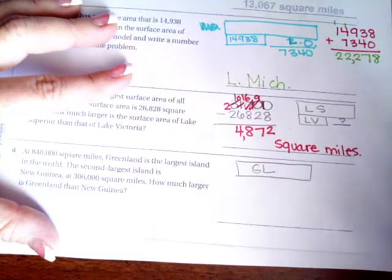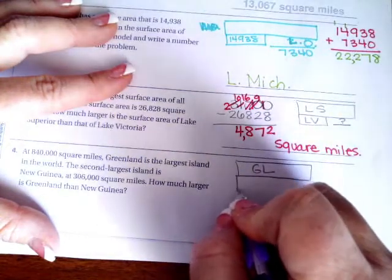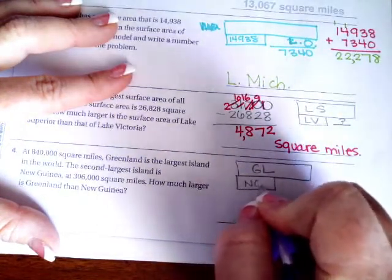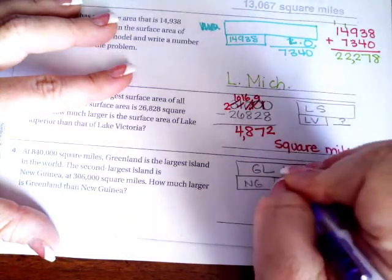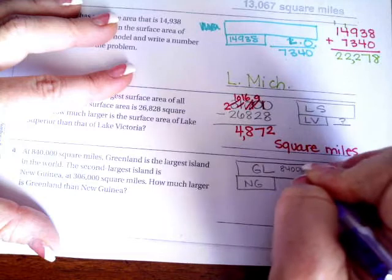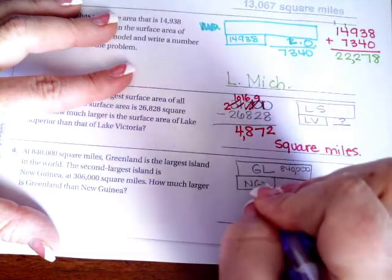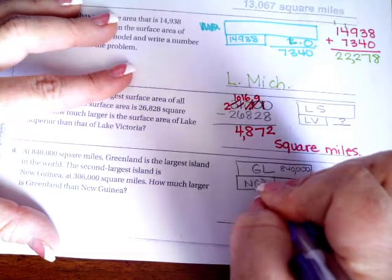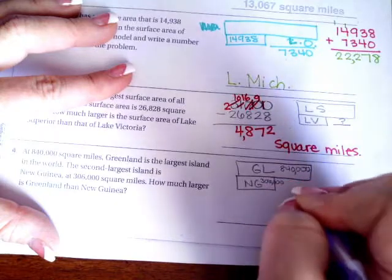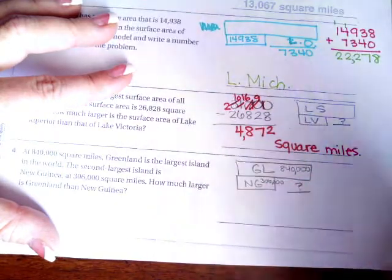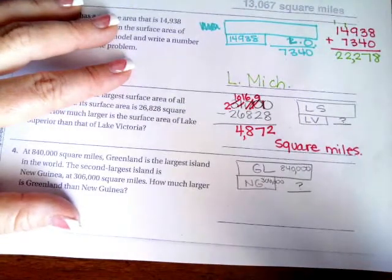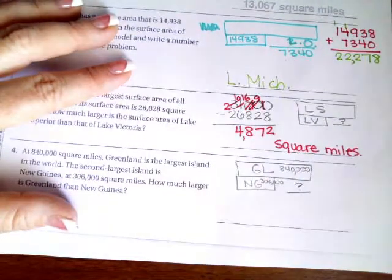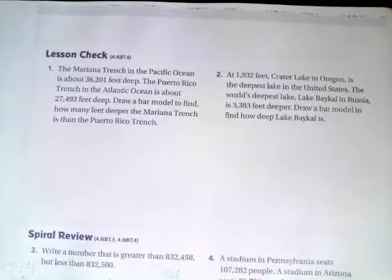So we have Greenland. Greenland is 840,000. New Guinea is 306,000. And then it wants that number, so it wants the difference in these two numbers. Difference means subtraction. So go ahead and do that. We're going to go over onto the back where you guys are going to do the lesson check.